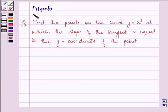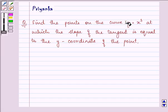Hi, how are you all today? My name is Priyanka, and the question says: find the points on the curve y = x³ at which the slope of the tangent is equal to the y-coordinate of the point.